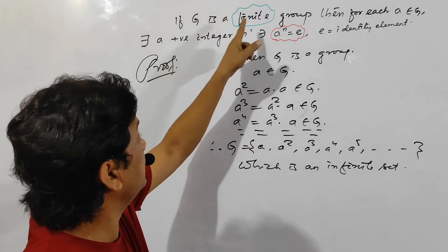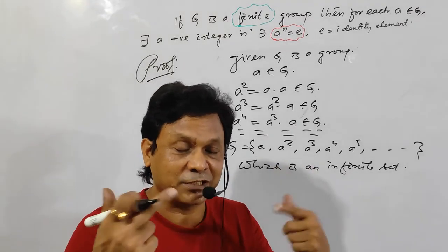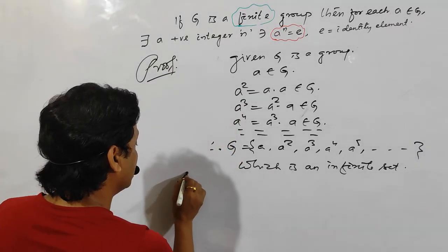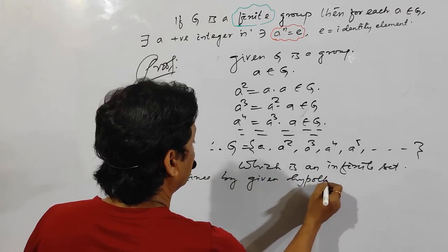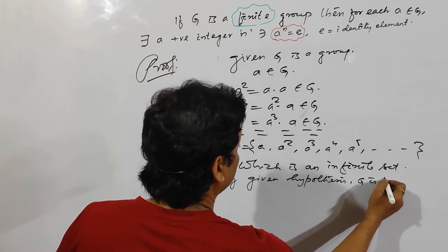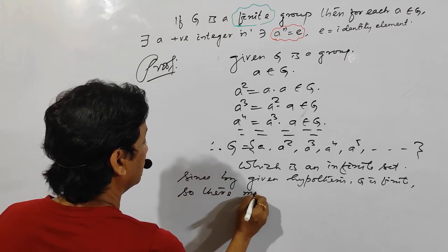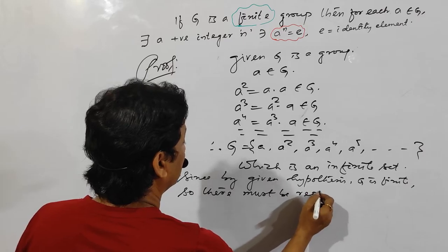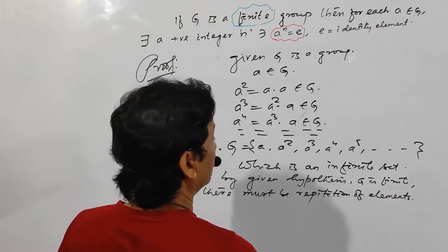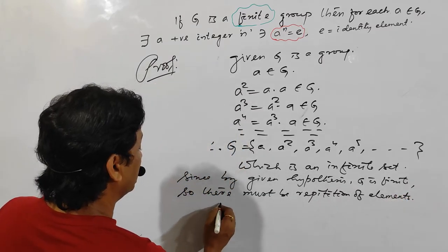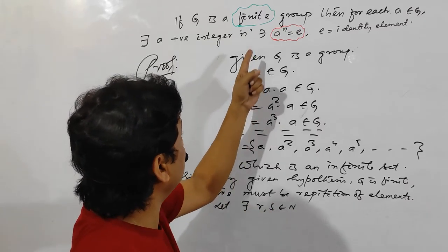But in the question it is given that G is finite. An infinite set will become finite if there is repetition of elements. Since G is finite, by the given hypothesis, there must be repetition of elements. So there exist r and s belonging to the natural numbers — positive integers, because the powers are all positive integers — with r greater than s.